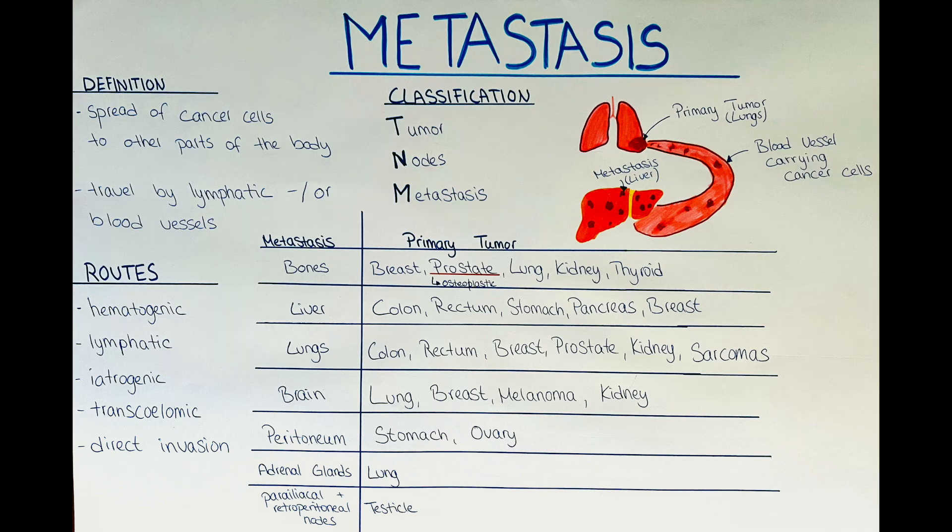The liver is also an organ we very often see metastasis to. It is commonly involved in metastasis from colorectal cancer, stomach cancer, pancreatic and breast cancers. The lungs as well are a frequent site for metastasis from breast, colorectal, prostate, kidney and sarcomas.